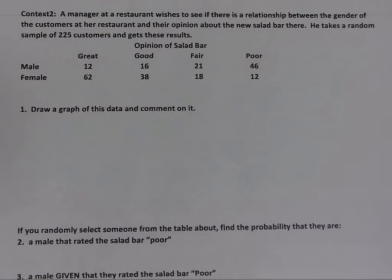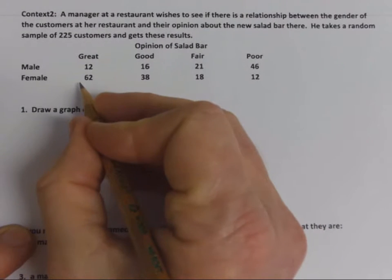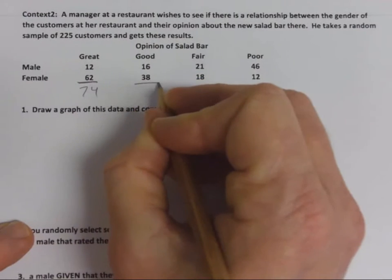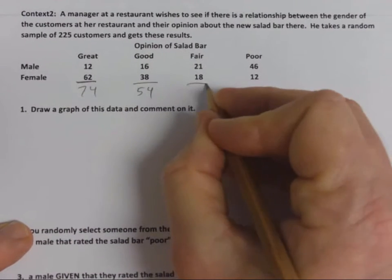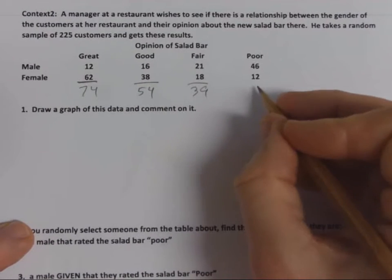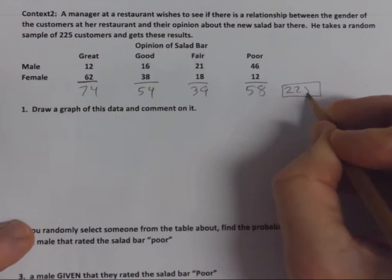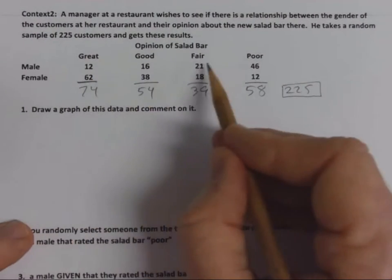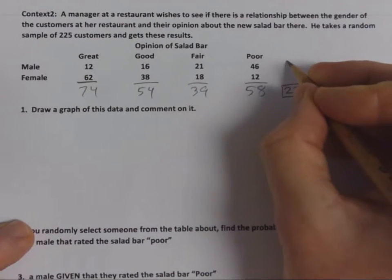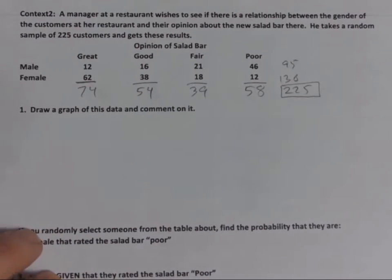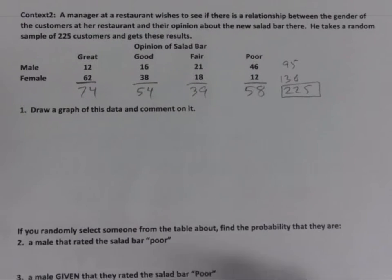Whenever you're given a two-way table, I encourage you to find the marginal distributions — the totals. The total that said great is 74, good is 54, fair is 39, poor is 58, summing to 225. The total number of males is 95 (12+16+21+46), and the total number of females is 130. That also adds up to 225.